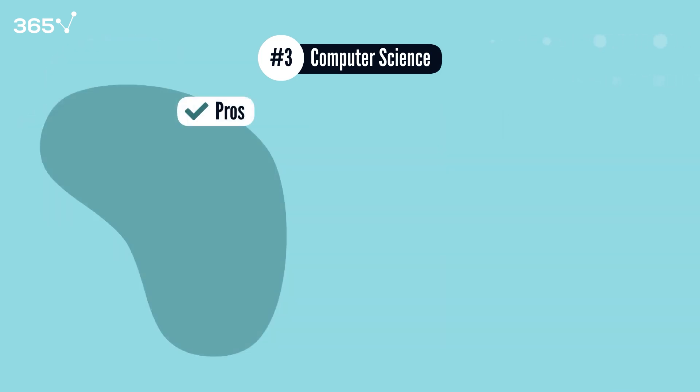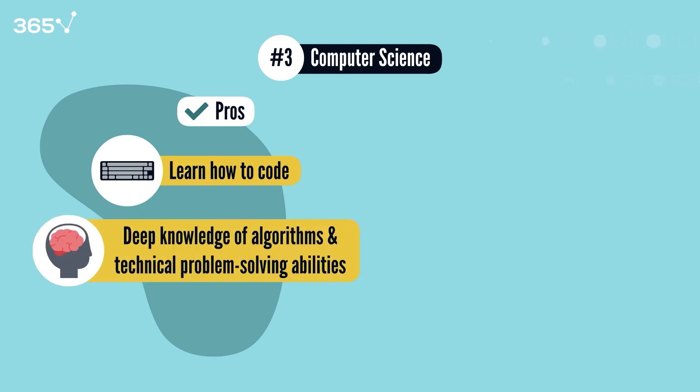Pros. The best thing about getting a computer science degree is that you'll learn how to code. You'll also graduate with a deep knowledge of algorithms and technical problem-solving abilities. Companies love computer science grads because they know how to build systems that work and scale and understand the nuts and bolts of software development.